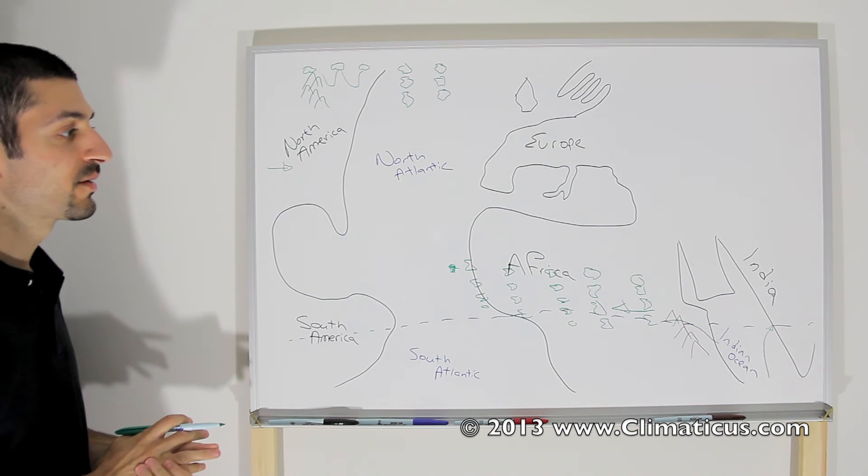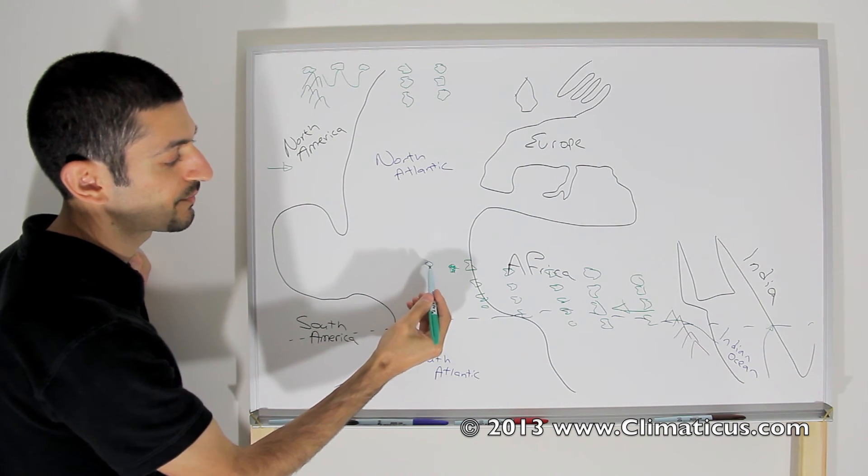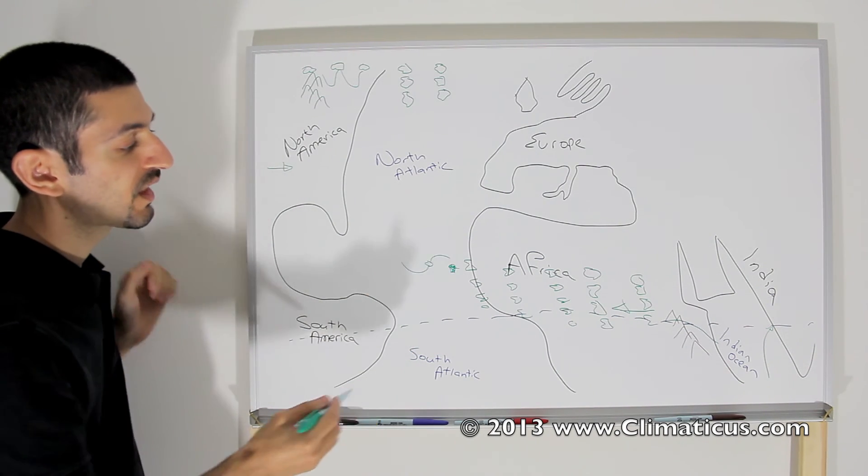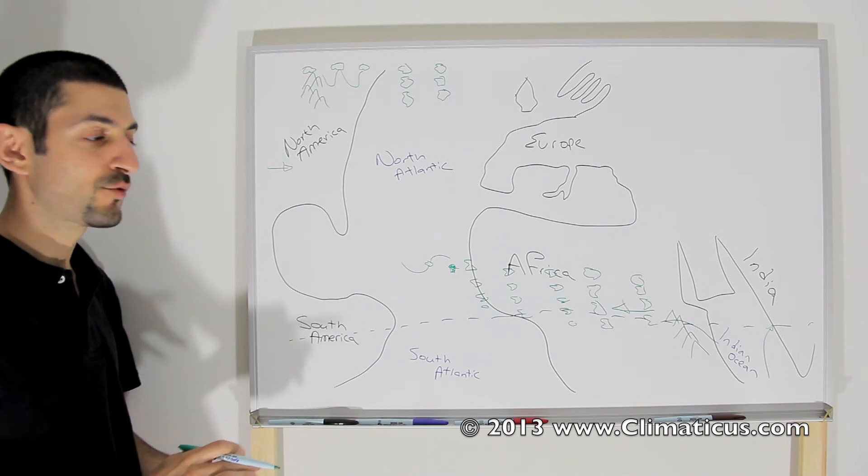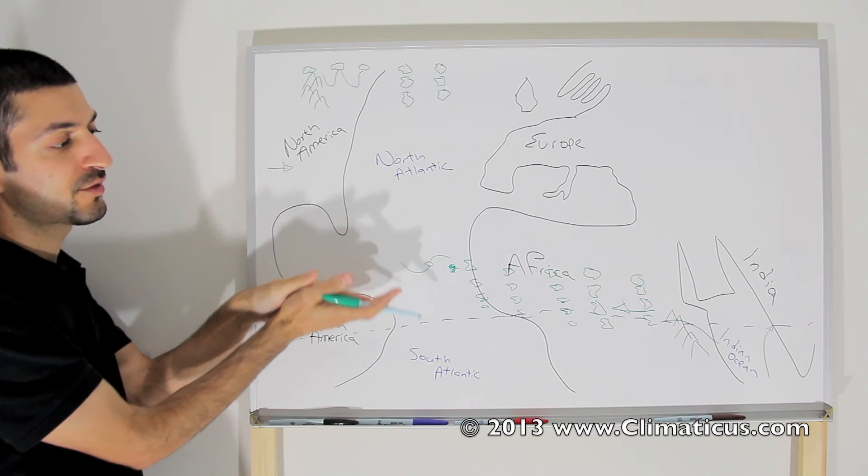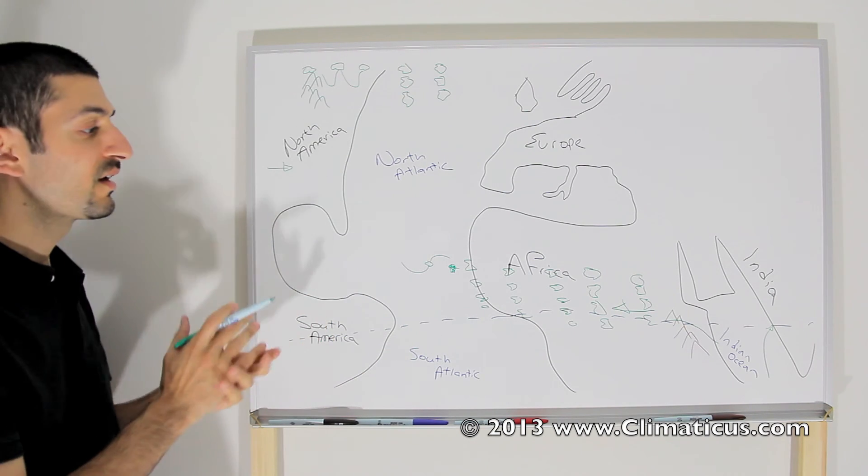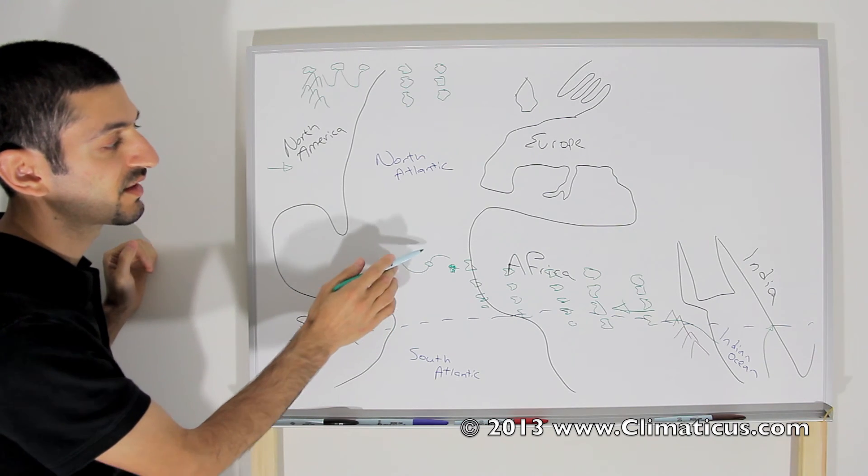And a lot of times, some hurricanes will form just past the Cape Verde Islands, where you end up having rotation. And hurricanes do not form at the equator. They usually form a little bit further north or south latitude, because you have the Earth spin, and it causes this side to spin at a different speed than that side.